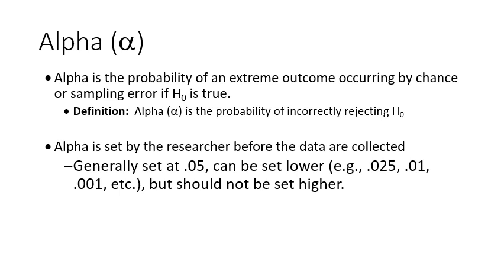If we collect a sample of Detroit Mercy students and get an average age of 19, run statistics, and determine we're going to reject H₀ — saying Detroit Mercy students are younger than average — however we had a really weird sample where, by a 1% chance, we got a sample that was all young students and the actual average age is 22. So we shouldn't have rejected H₀. Alpha is our probability — or risk we're willing to take — as a researcher that we're going to incorrectly reject H₀. If we set it at 5%, that means we're willing to take a 5% risk.